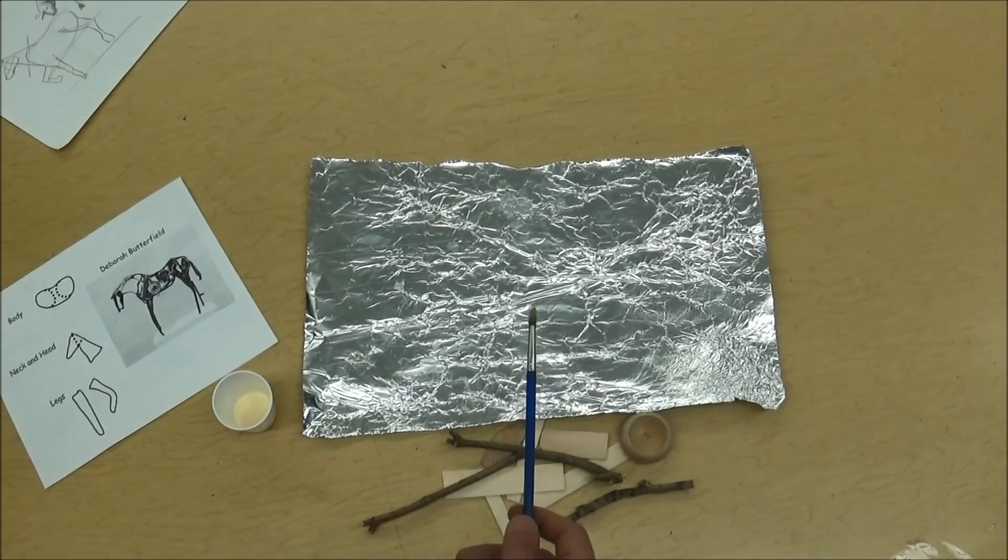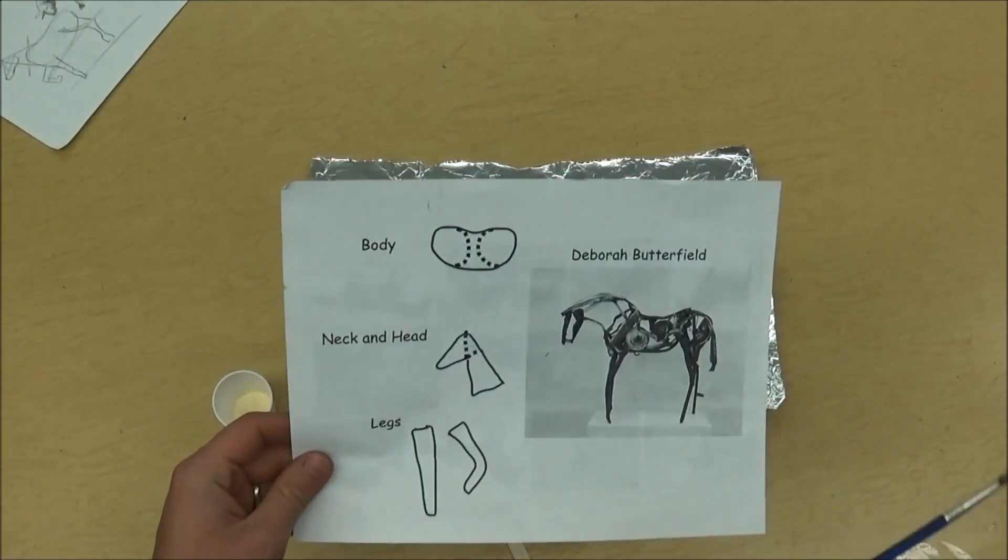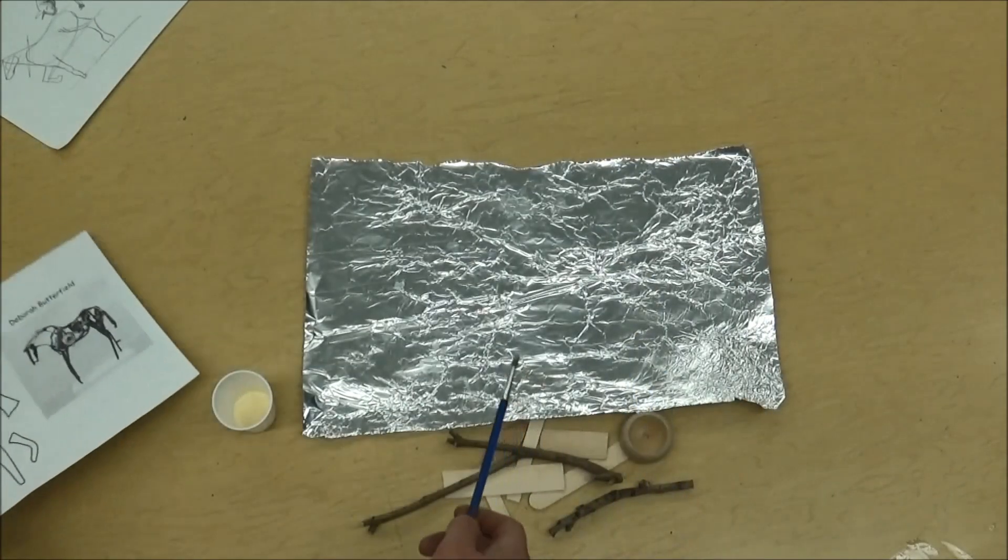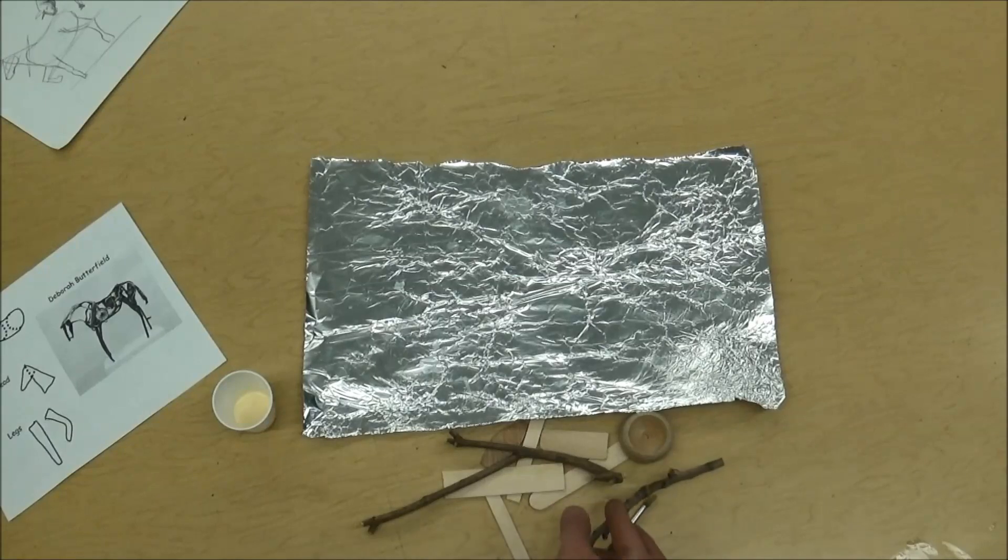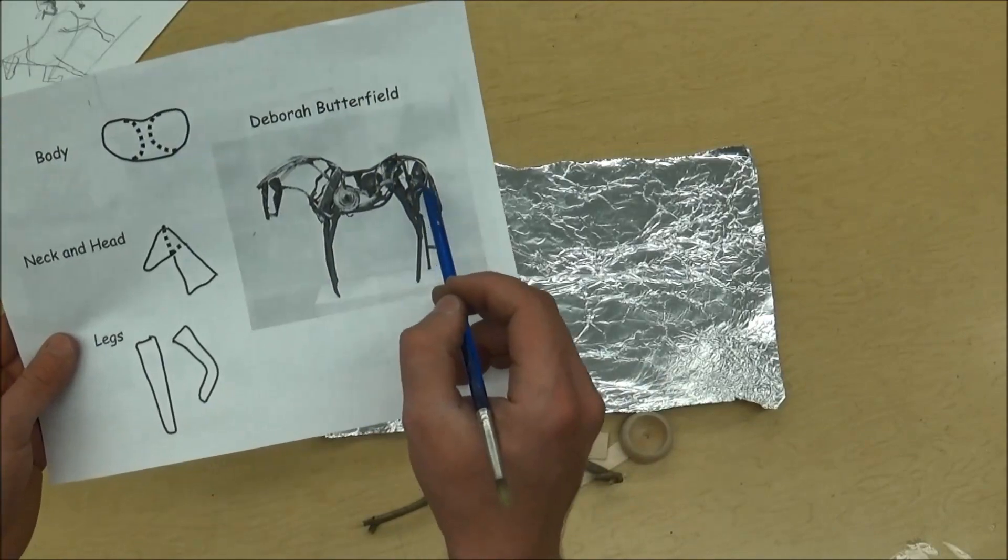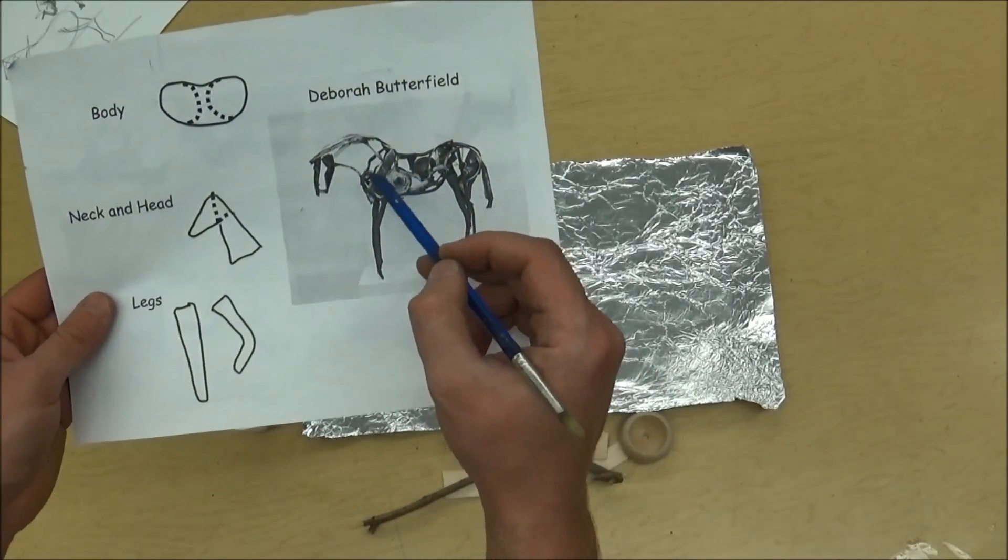First step, we need to make the body. Just like when we made the drawing, we're going to sculpt the body. So we're going to need to find sticks that kind of have that shape to it. And if you remember, a horse is kind of round in the back, round on the chest.